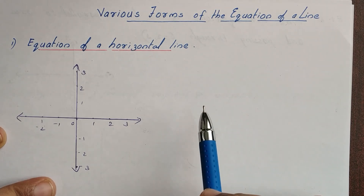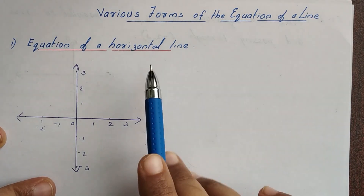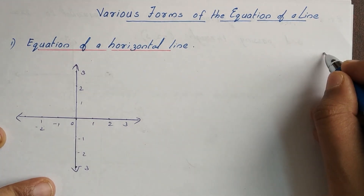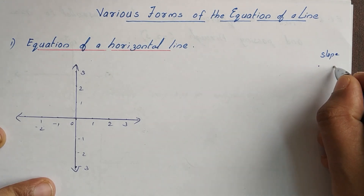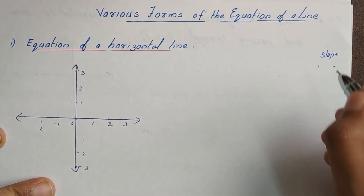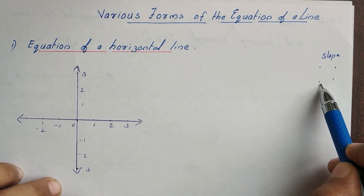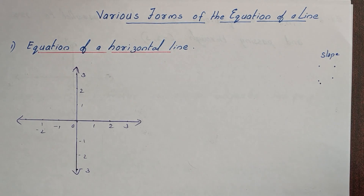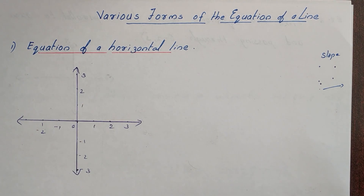Hi Students! In this video, we are going to learn equations of a line — that is, various forms of equations of a line. We will learn how to find the slope using two points, how to put in the angle to get the slope, and how to handle perpendicular and parallel cases. We are going to study the straight line equation.